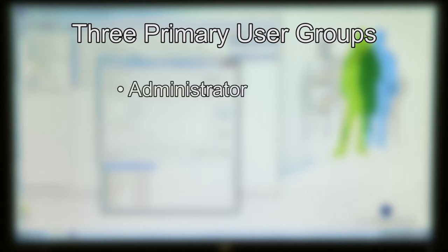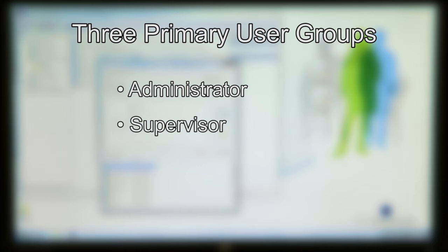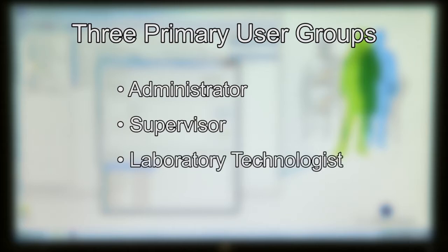There are three primary user groups established in the Windows 7 operating system. The Administrator group allows full Windows access, including creating user accounts and installing and configuring software. It also provides full Vitek 2 system software and BCI link access, and may be appropriate for Laboratory Supervisors or key operators. The Supervisors group has restricted Windows access but full Vitek 2 system software and BCI link access, appropriate for Microbiology Bench Technologists. The Laboratory Technologists group has limited access to Windows, Vitek 2 and BCI link software; users can perform most daily activities but cannot configure the software. This group may be appropriate for laboratory aides or weekend personnel.